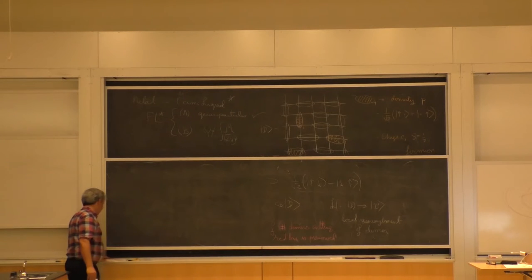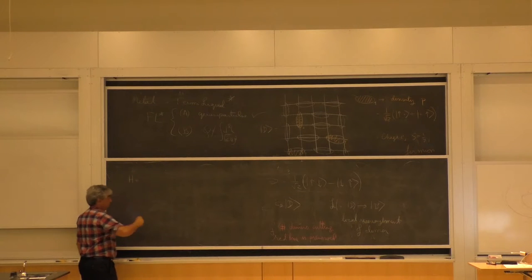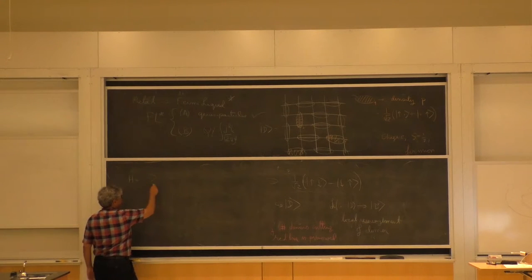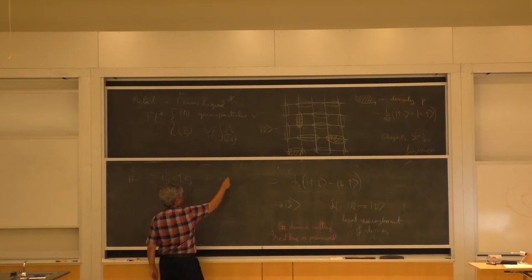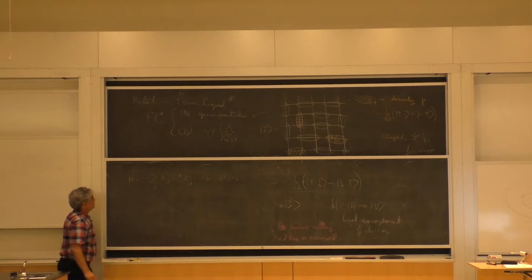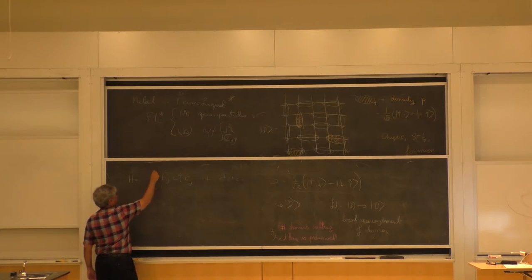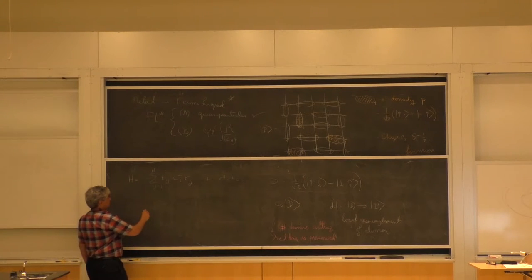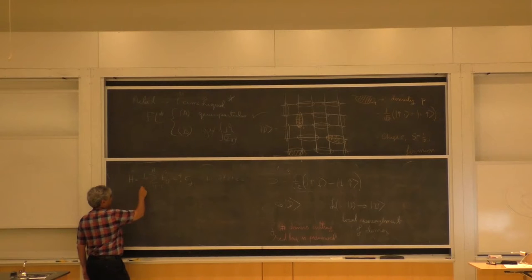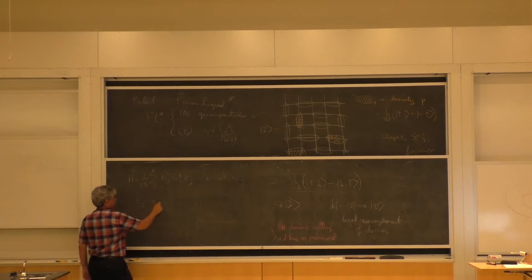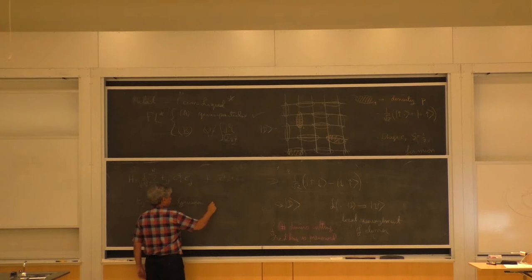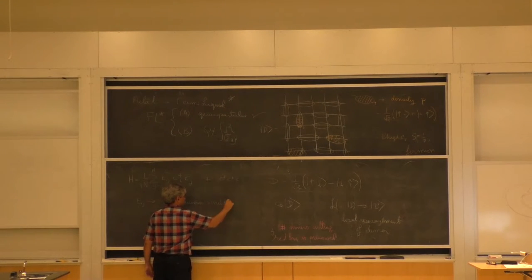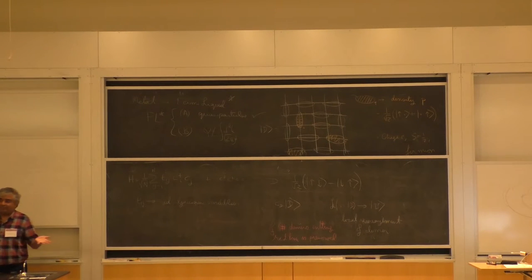So I'll begin by talking about a model of a Fermi liquid. It's a very simple model — it initially doesn't even have interactions, doesn't even have momentum, and won't even have spin. So it's just T_ij c†_i c_j plus some four-body terms, where i and j go from 1 to N. I'm going to put a 1 over square root of N here, and take T_ij as independent complex Gaussian random variables. So it's what's called a random matrix model.